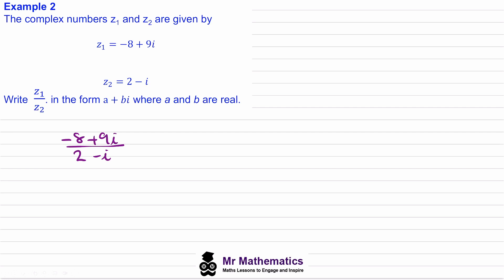Welcome back. We need to multiply the numerator and denominator by the complex conjugate of 2 minus i, because then the negative i will cancel with its complex conjugate. So we multiply both by 2 plus i.